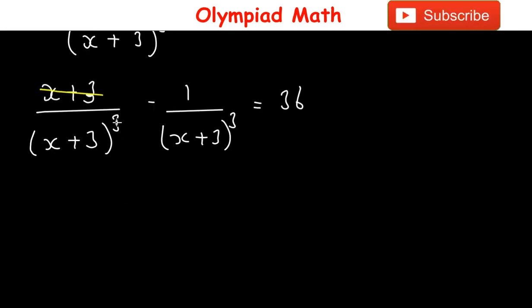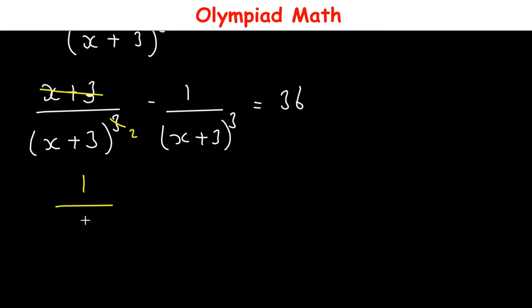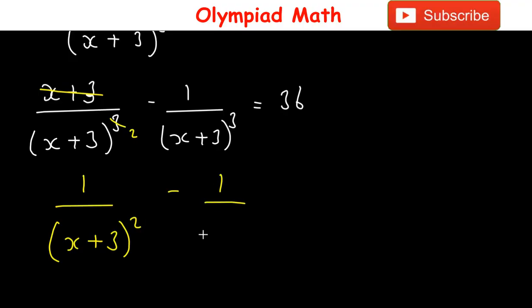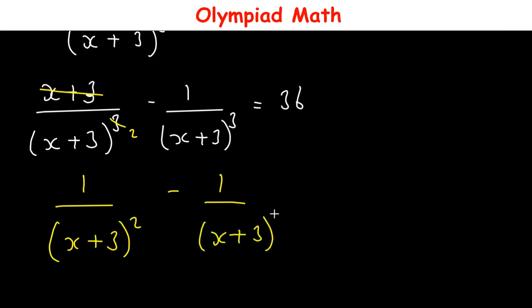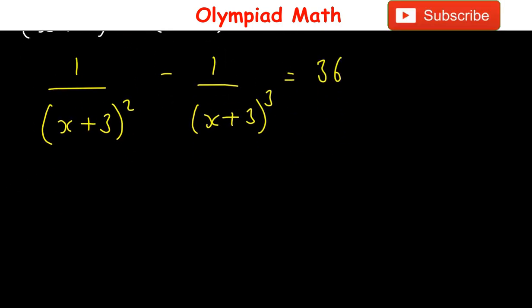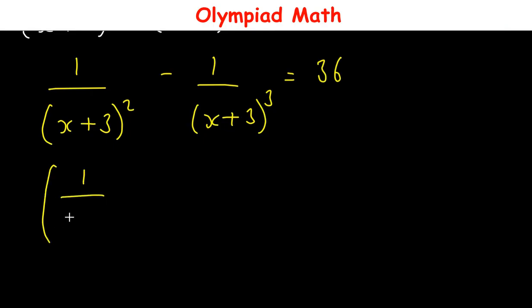Next, (x+3) cancels with part of (x+3)³, leaving us with 1/(x+3)² minus 1/(x+3)³ = 36.